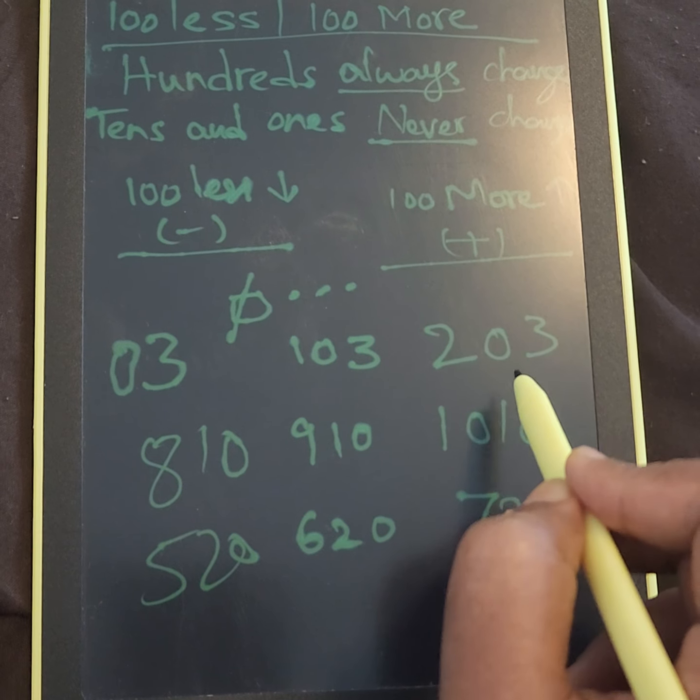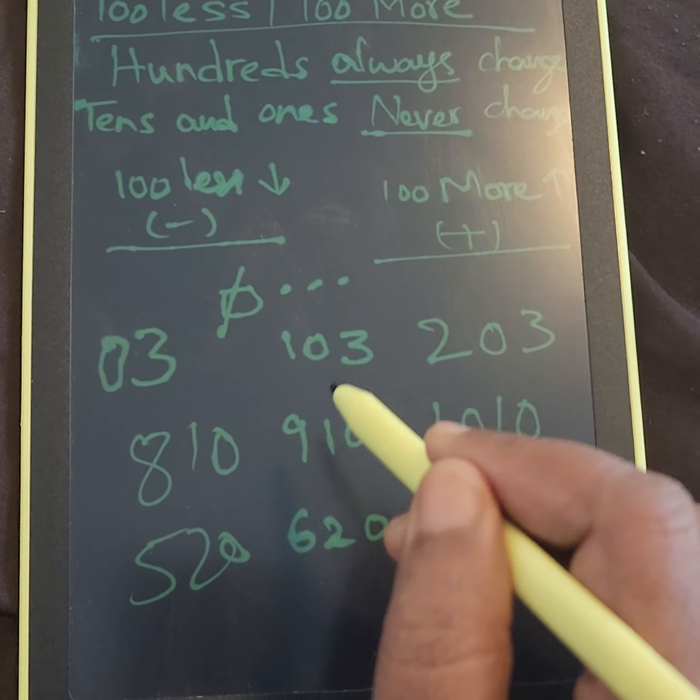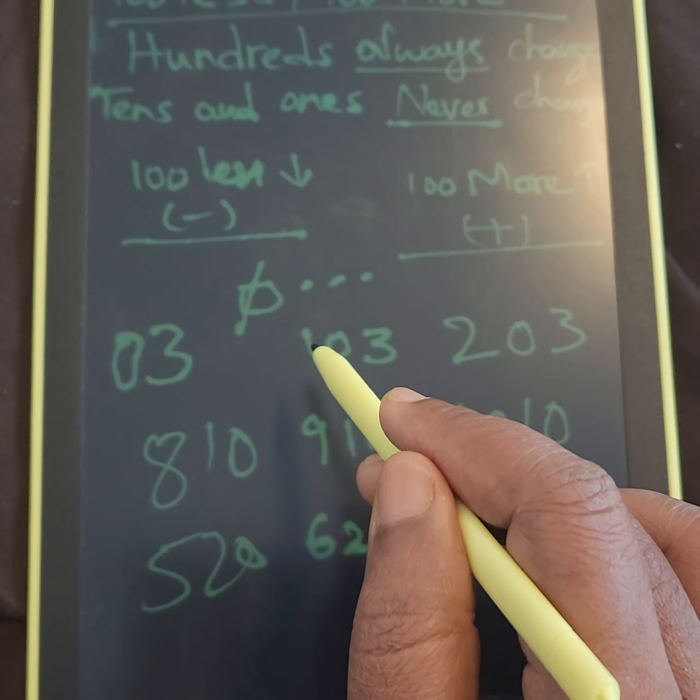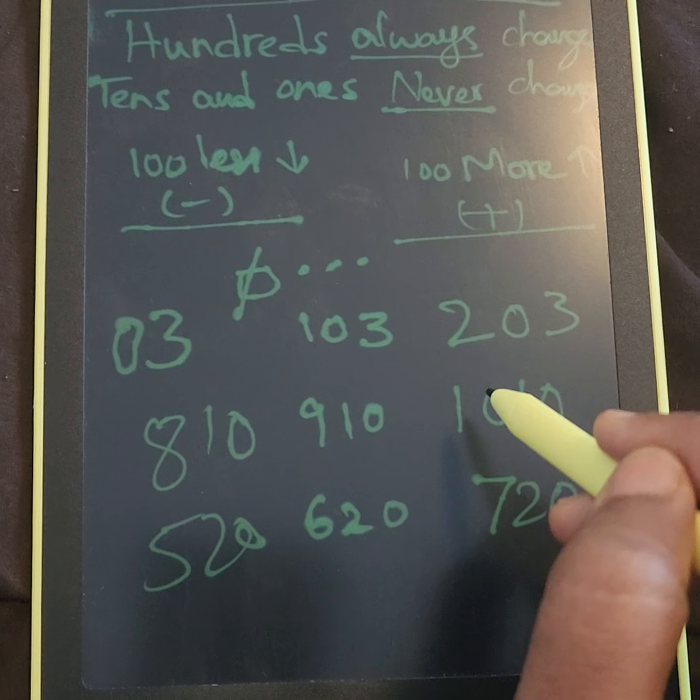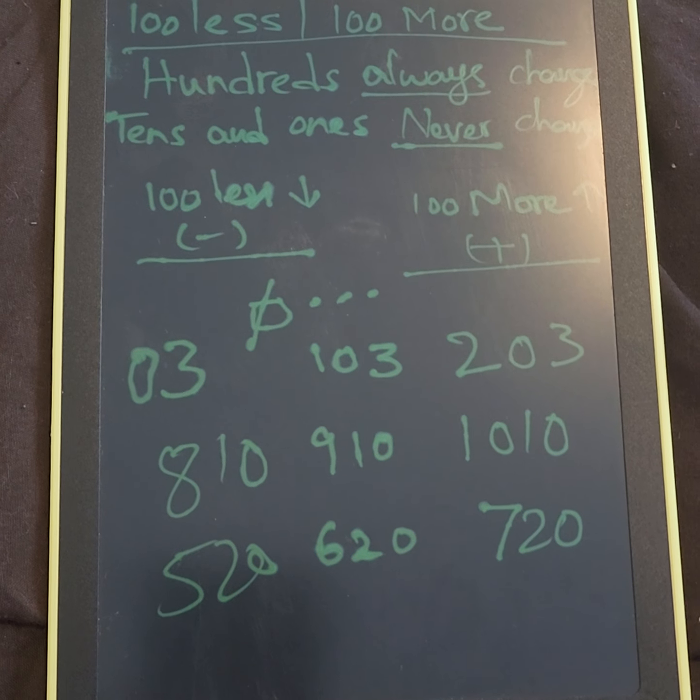So tens and ones never change in hundred less and hundred more. Only we'll subtract hundred or we add hundred. I hope it is helpful to you all. Thank you.